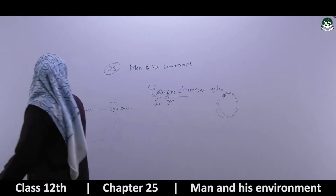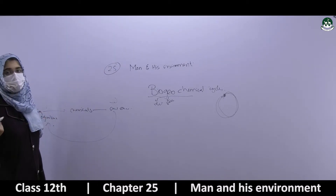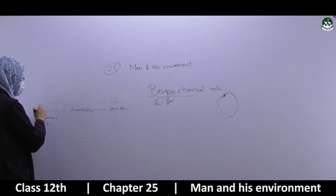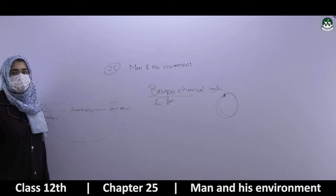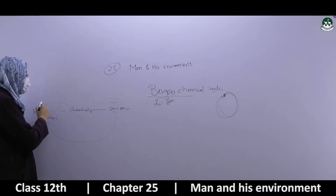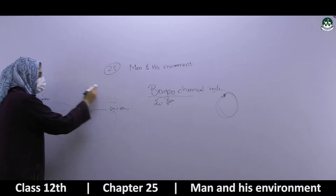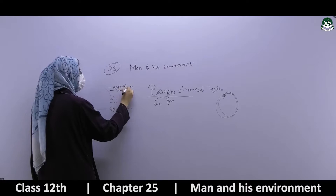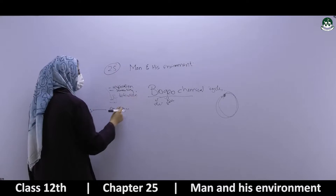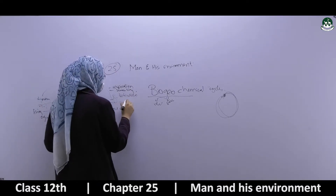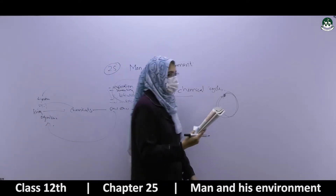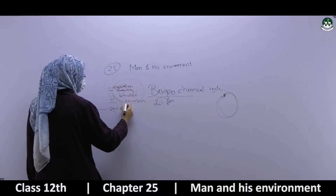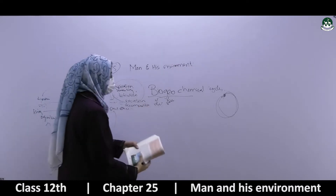Organisms take in chemicals from nature — whether from carbohydrates (carbon, hydrogen, oxygen) or proteins (sulfur, nitrogen, hydrogen in amino acids). All living organisms — humans, cows, monkeys, tigers — ingest these chemicals, and through processes like respiration, sweating, defecation (removing undigested waste), excretion of nitrogenous waste like urine, and decomposition, these chemicals are released back into the environment.